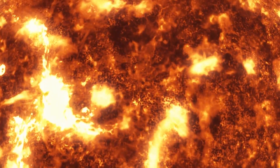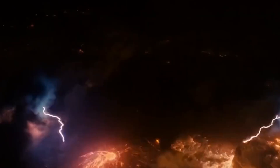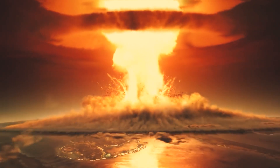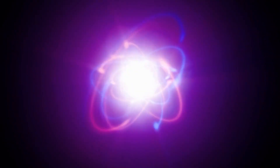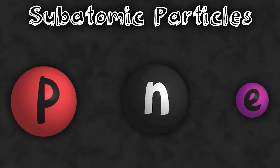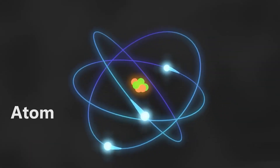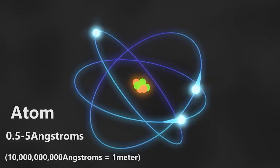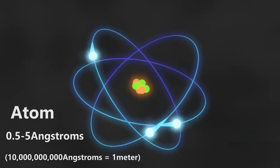Even though the temperature was close to a trillion degrees Celsius, the universe began to cool and expand swiftly as soon as it reached a second. As a result of this expansion, the universe cooled and stretched, resulting in the formation of subatomic particles such as protons, neutrons, and electrons. Because atoms cannot exist at such extreme temperatures, neither of these particles could link to form atoms.